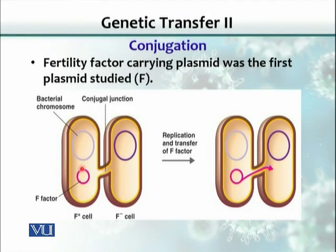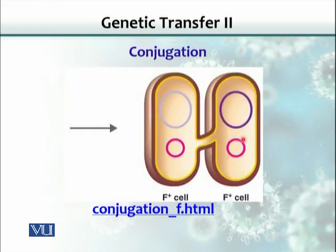Here is a schematic diagram representing the same process. This is an F-factor, which is essentially a plasmid. This is a conjugal junction — basically the sex pilus. The plasmid duplicates, replicates, and sends one copy to the other cell. This is the F-positive cell and this is the F-negative cell. When it sends one copy over, that copy gets duplicated. This is how the F-negative cell acquires the plasmid and becomes an F-positive cell.